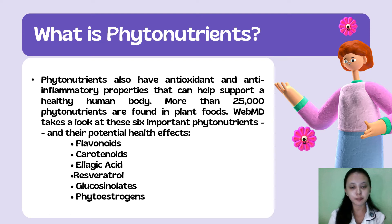WebMD identifies six important phytonutrients: flavonoids, carotenoids, ellagic acid, resveratrol, glucosinolates, and phytoestrogens. But we are going to discuss only two — flavonoids and carotenoids.